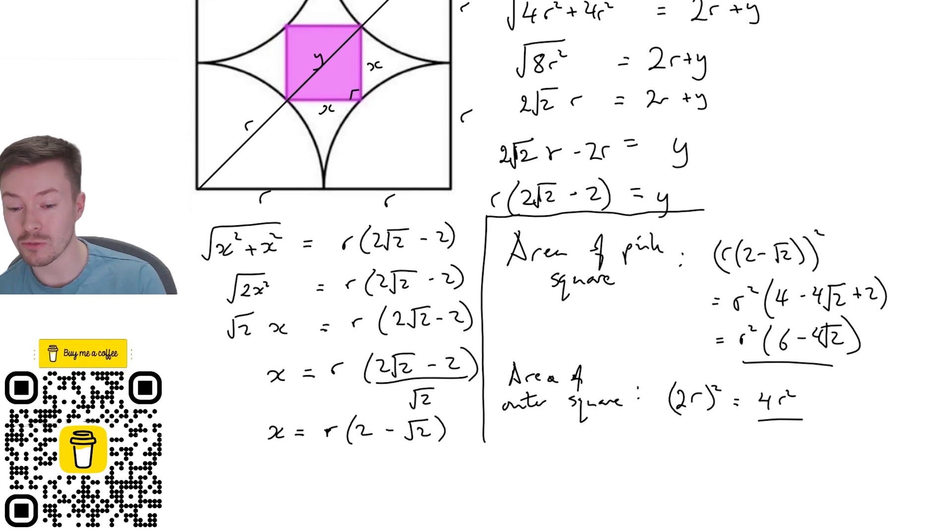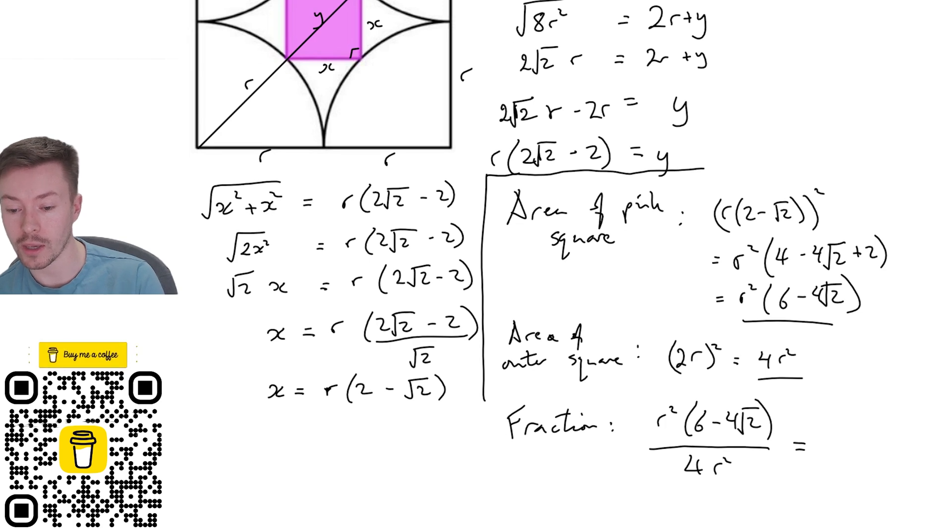At this point we're ready to write as a fraction, so the fraction of the shape that is pink is r squared lots of 6 minus 4 root 2 out of a total of 4r squared. Now simplifying that we can cancel out the r squared top and bottom and then we've got 6 minus 4 root 2 divided by 4. What we can do there is divide top and bottom by 2 because we want to leave this as a fraction. So divide top and bottom by 2, I'm going to get 3 minus 2 root 2 over 2 and that is the fraction of that shape that is shaded pink.